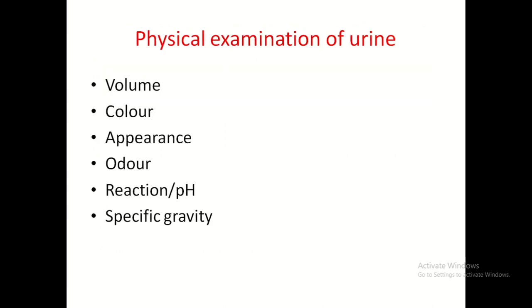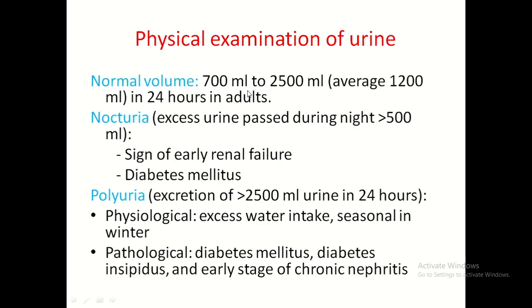Physical examination of urine includes volume, colour, appearance, odour, reaction or pH, and specific gravity measurement. The normal urine volume is 700 ml to 2500 ml, with an average of 1200 ml in 24 hours in adults.